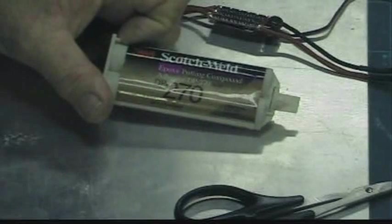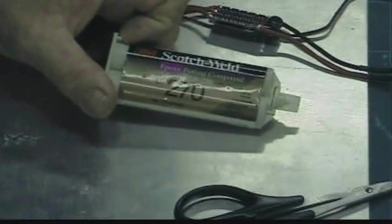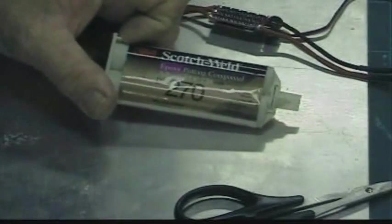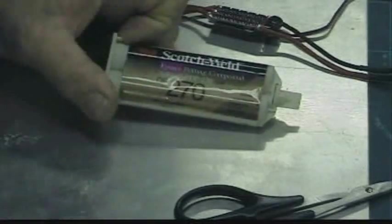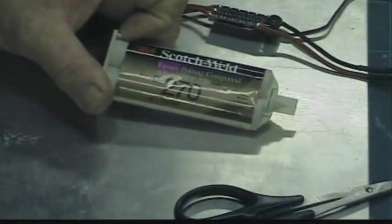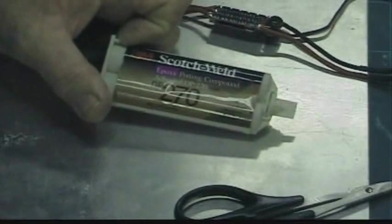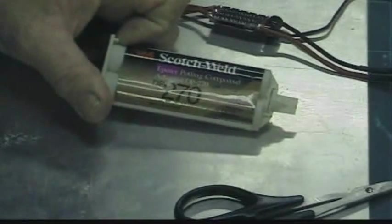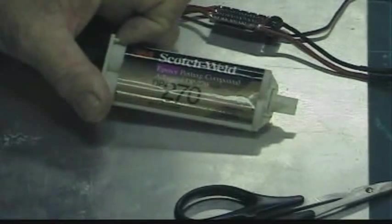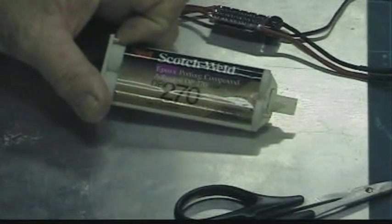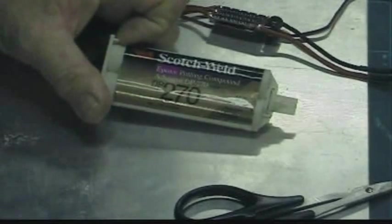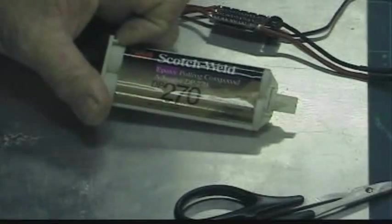Scotch Weld DP270. It's a potting compound, an epoxy potting compound. We're not going to exactly pot these things because we're worried about heat. But it is designed for electronic circuits, it will not conduct electricity. That's why we can use it on these delicate little speed controls.